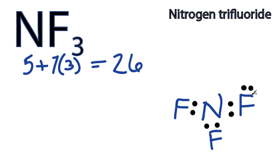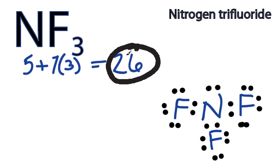So we have 2, 4, 6, 8, 10, 12, 14, 16, 18, 20, 22, 24, and we'll put the last two here, 26, which is what we had to work with, to give nitrogen an octet.